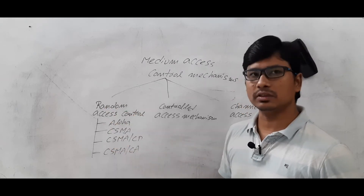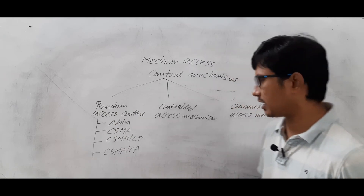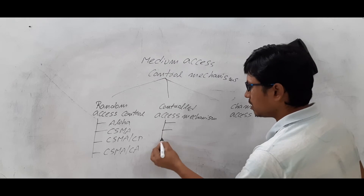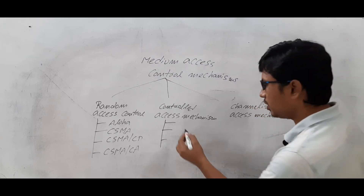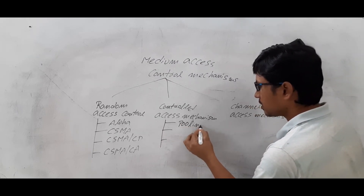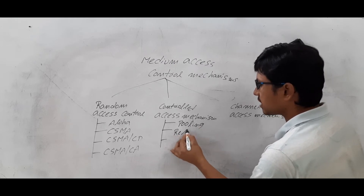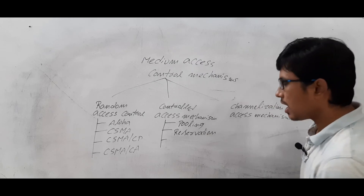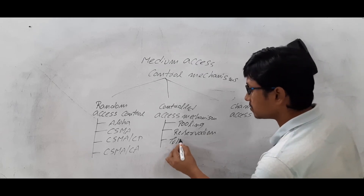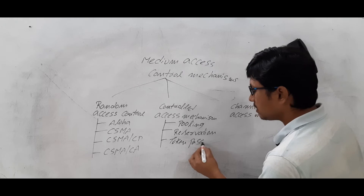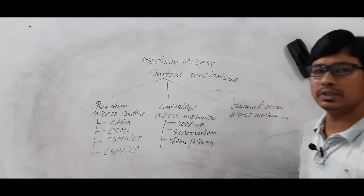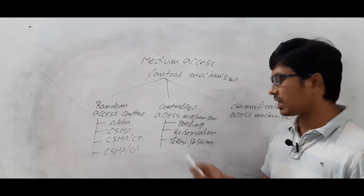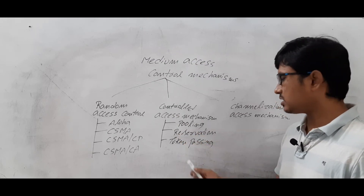Coming to the controlled access mechanisms, we have the polling mechanism, the reservation mechanism, and the token passing mechanism. These are the three access mechanisms that fall under the category called controlled access mechanisms.